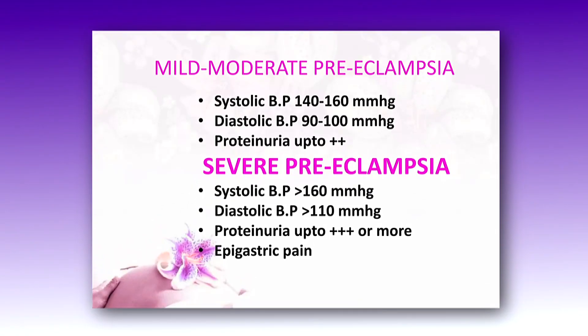In case of mild to moderate preeclampsia, the systolic blood pressure will be 140 to 160 mmHg, and the diastolic BP will be 90 to 100 mmHg, with proteinuria of 2+. In case of severe preeclampsia, the systolic BP will be more than 160 mmHg, the diastolic BP will be more than 110 mmHg, proteinuria will be 3+ or more, and epigastric pain can also be expected.